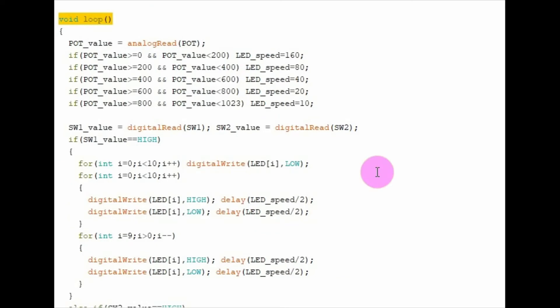In the loop function, we first read the potentiometer value, which is a value between 0 and 1023. This value is then used to determine the delay function parameter.